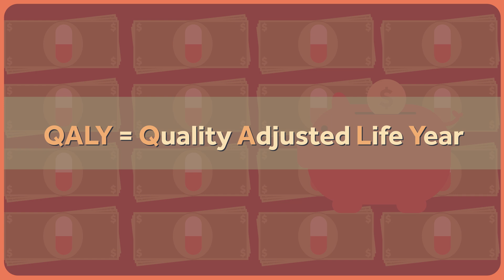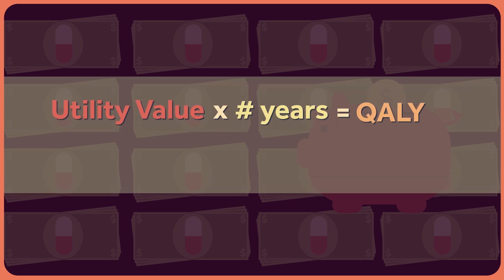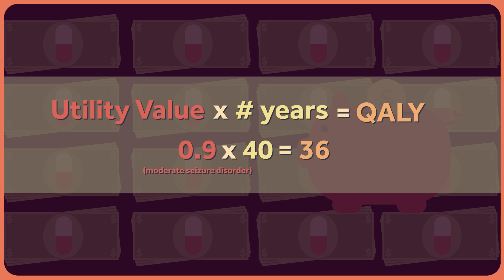A QALY takes into account both how long you're going to live, as well as the quality of the life you'd have while alive. When you take a utility value and multiply it by a number of years, you get a number of QALYs. Let's say moderate seizure disorder has a utility of 0.9. Then curing me of the illness would gain me 0.9 times about 40 years of remaining life, or 36 quality adjusted life years. So if I had 40 years of moderate seizure disorder left, I'd have 36 QALYs.